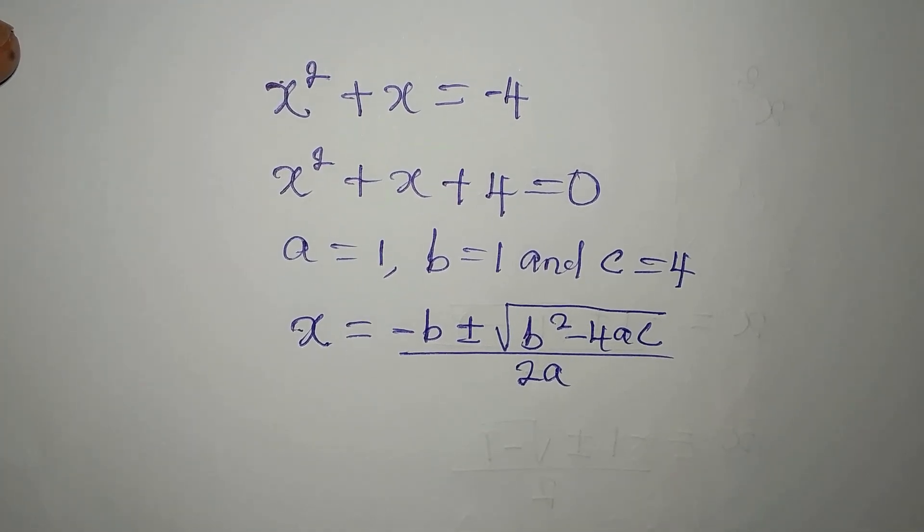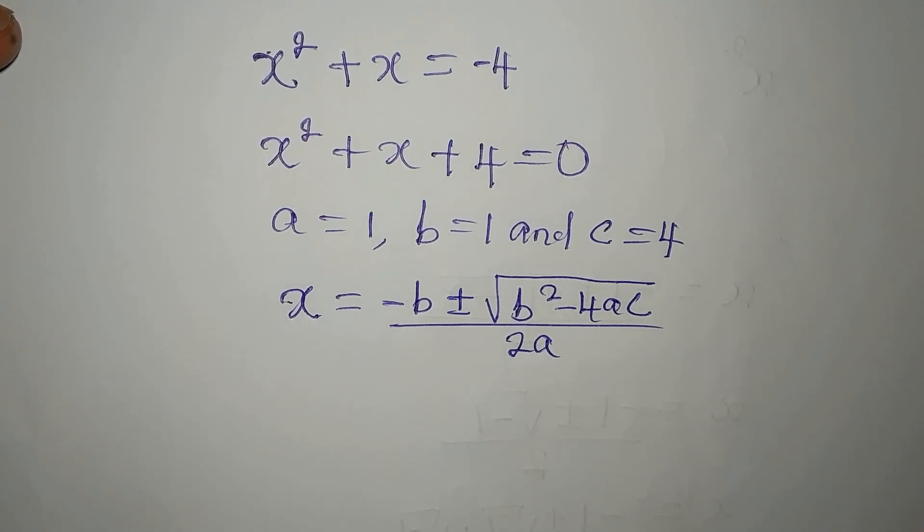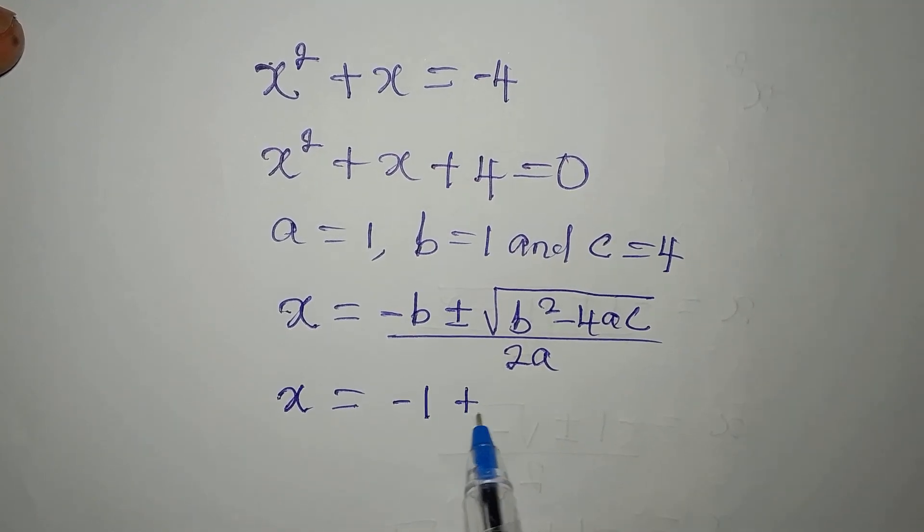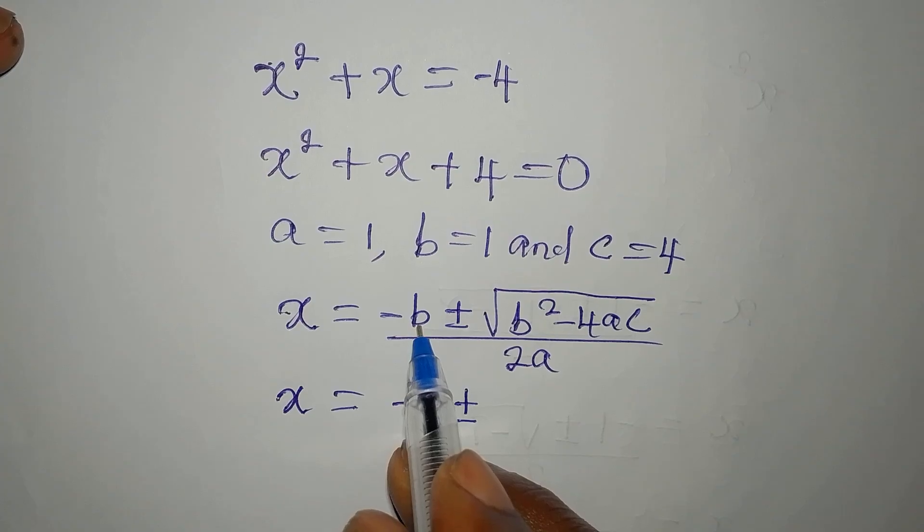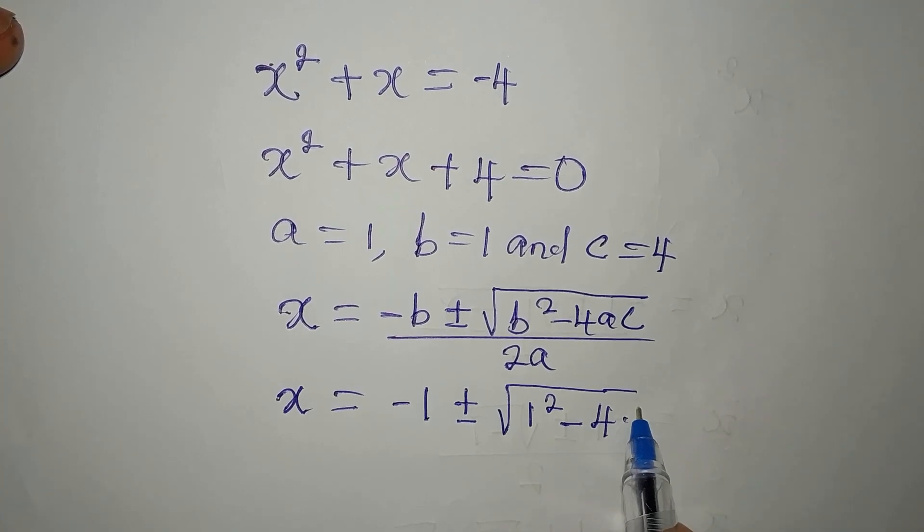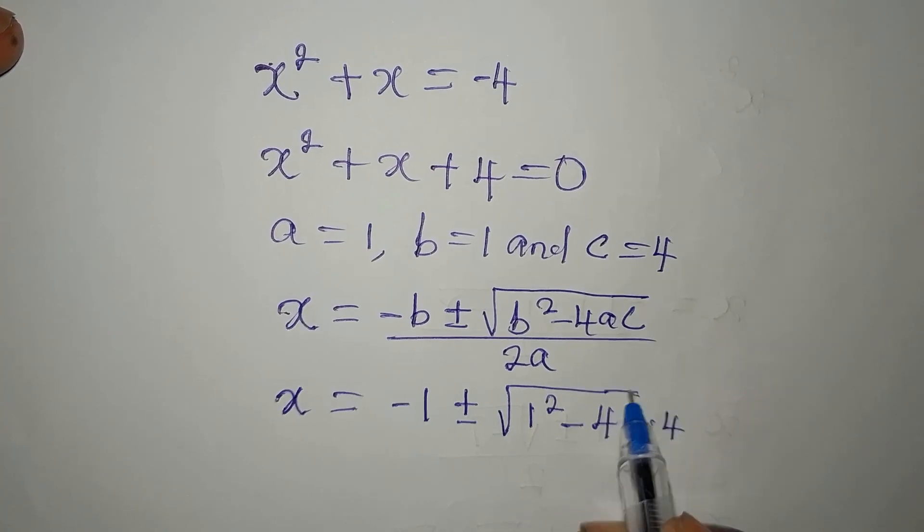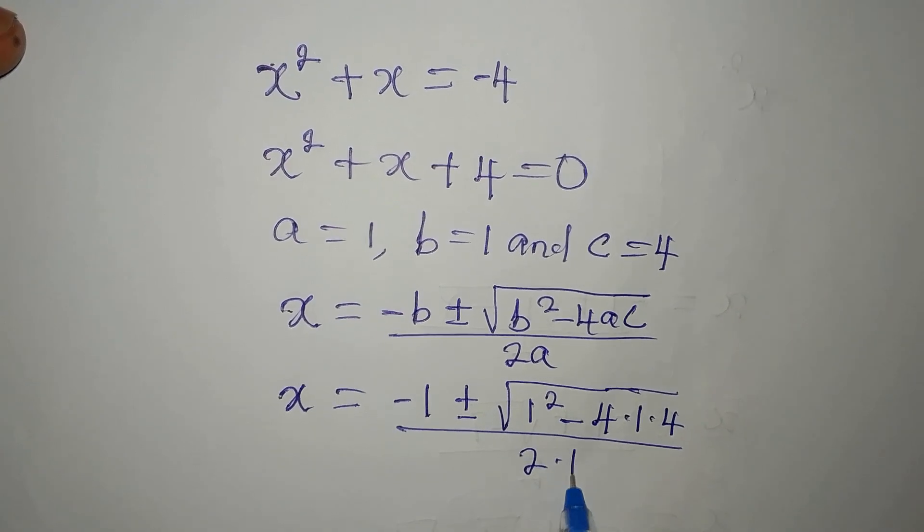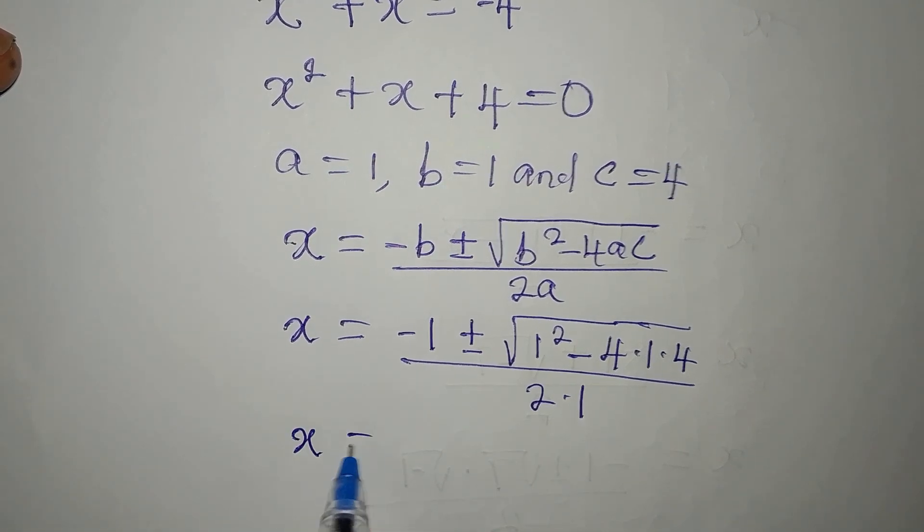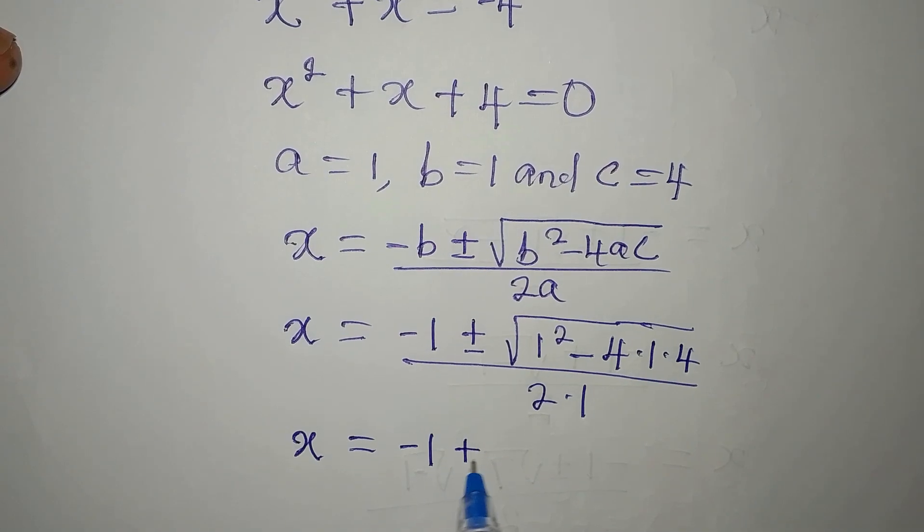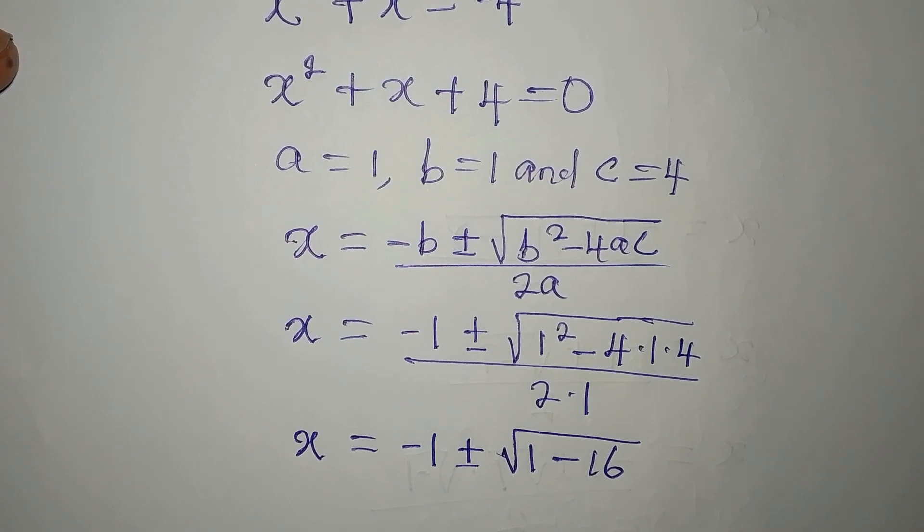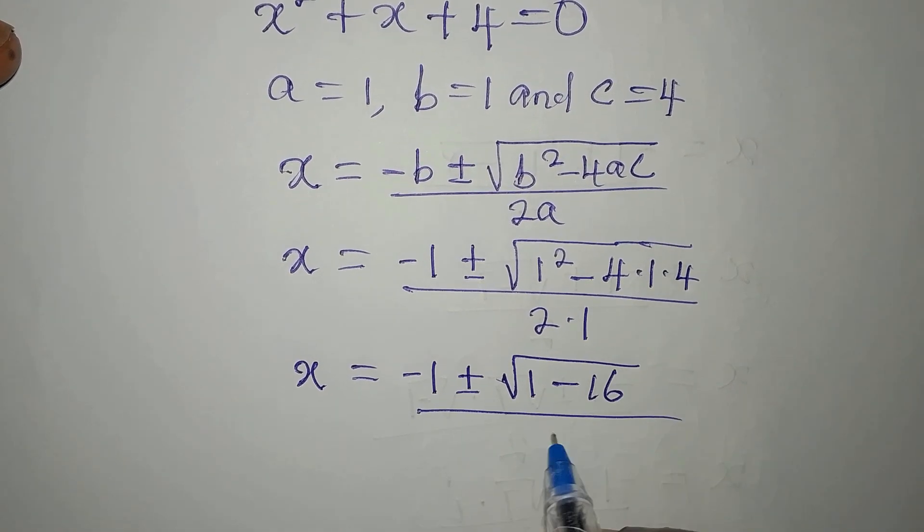Now, our x is going to be minus 1 plus or minus, because b is 1, the square root of 1 squared minus 4 times 1 times 4. Then we divide this by 2 times 1. To go ahead now, we are going to have our x to be minus 1 plus or minus the square root of 1 minus 16. 4 times 1 times 4. Then we divide this by 2.